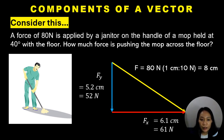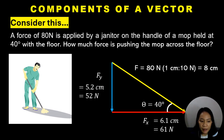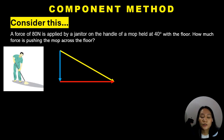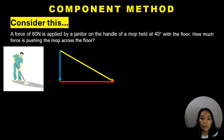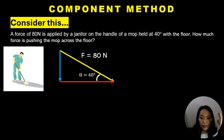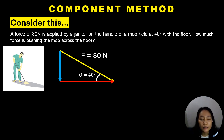Using the graphical method, you can roughly get the horizontal and vertical components. But the component method is normally suggested because it provides a more accurate value of the x and y components. Applying the component method to this example: the main vector is 80 newtons, and our goal is to determine the horizontal and vertical components. We know the force f is 80 newtons, and the angle with the horizontal is 40 degrees.